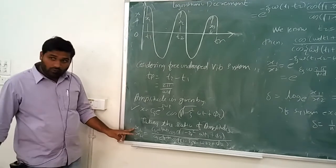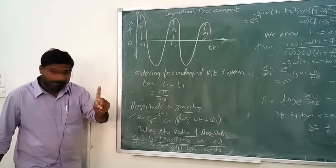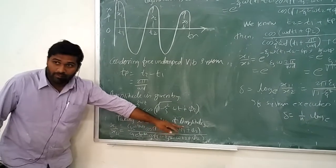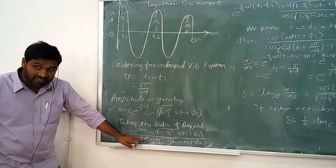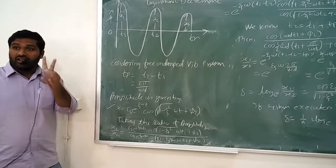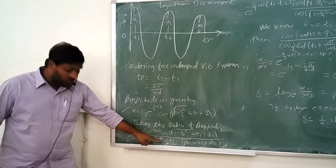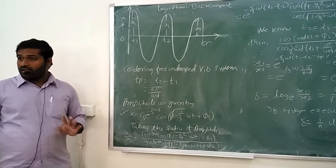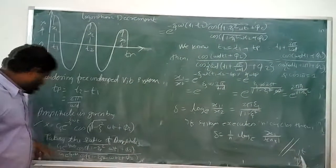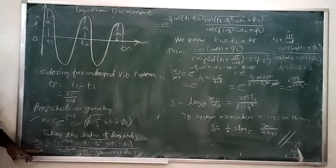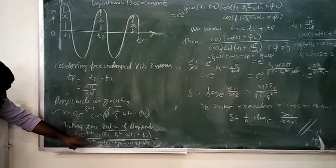Taking the ratio of amplitudes x1 by x2: the numerator is C4 · e^(−ζωt1) · cos(√(1 − ζ²) · ωt1 + φ2), and the denominator is C4 · e^(−ζωt2) · cos(√(1 − ζ²) · ωt2 + φ2). We are considering two different amplitudes x1 and x2; for x1 the time is t1 and for x2 the time is t2 — only the time changes, remaining terms stay constant. C4 cancels, giving e^(−ζω(t1 − t2)).